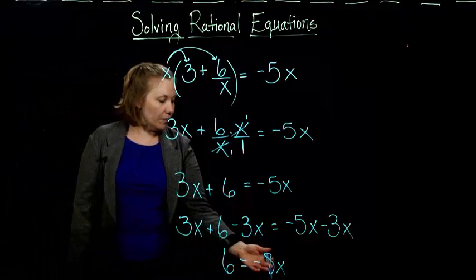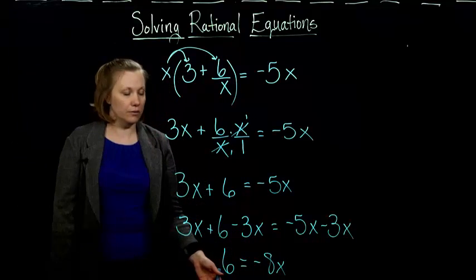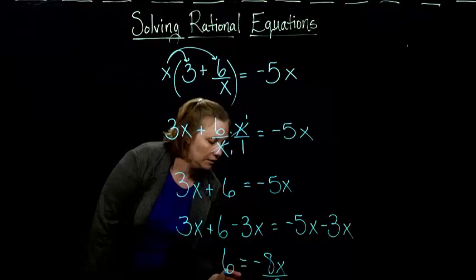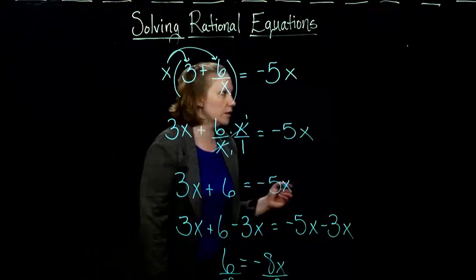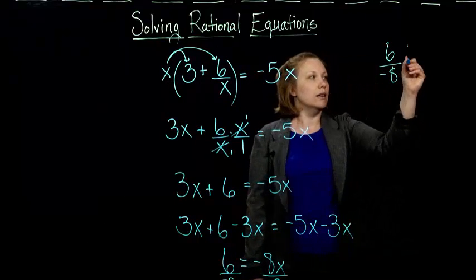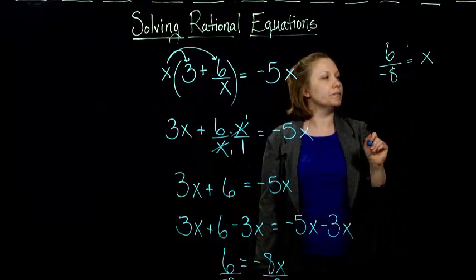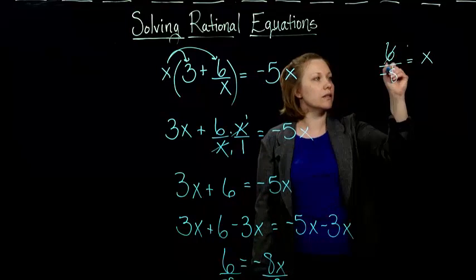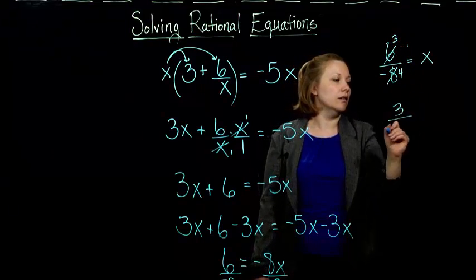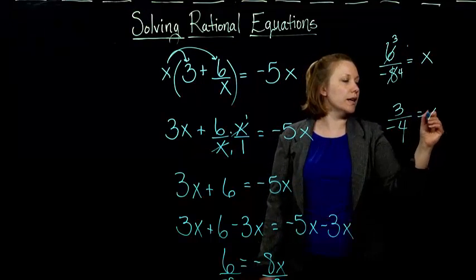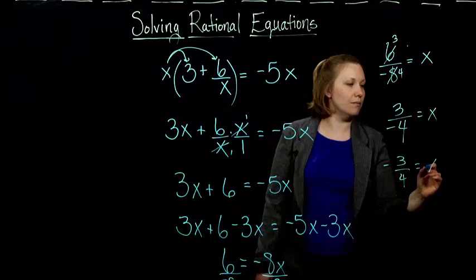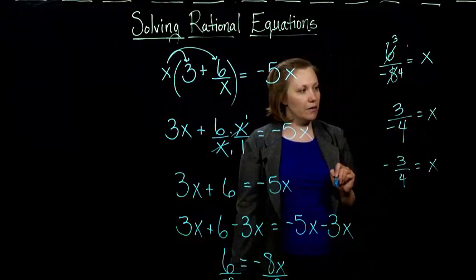And so I just have to finish up the problem. I have to get the x by itself. So I can divide on both sides by negative 8. So I end up with 6 over negative 8 equals x. And then I reduce this fraction and I get 3 over negative 4 equals x. Or you could write it as negative 3 fourths. They are the same number. Positive divided by a negative is negative.